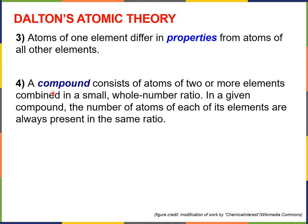Postulate four says a compound consists of atoms of two or more elements combined in a small whole number ratio. Compounds are more complex substances made up of two or more different types of atoms. In a given compound, the number of atoms of each of its elements are always present in the same ratio.